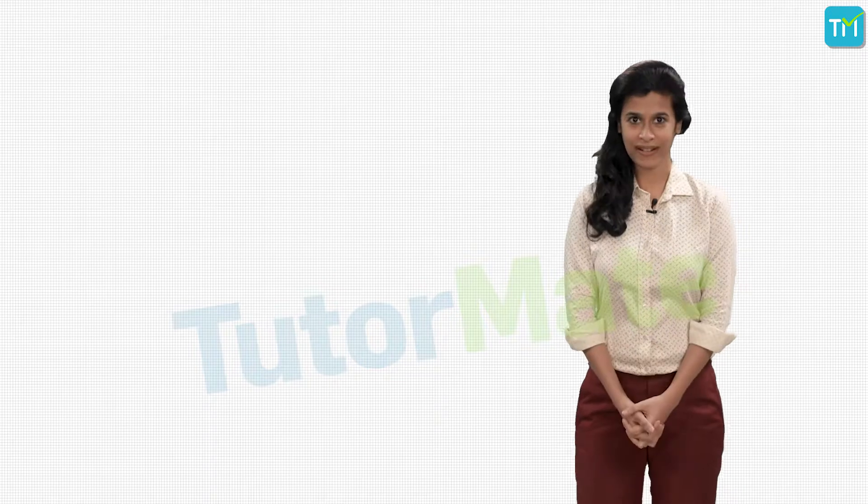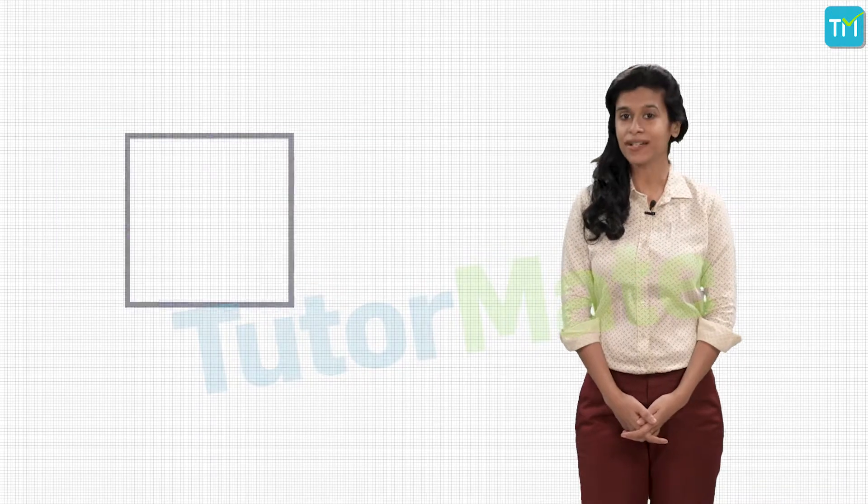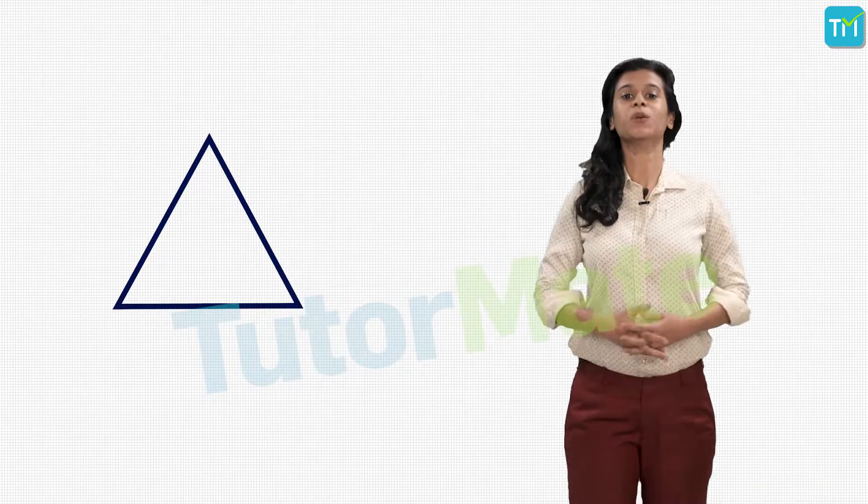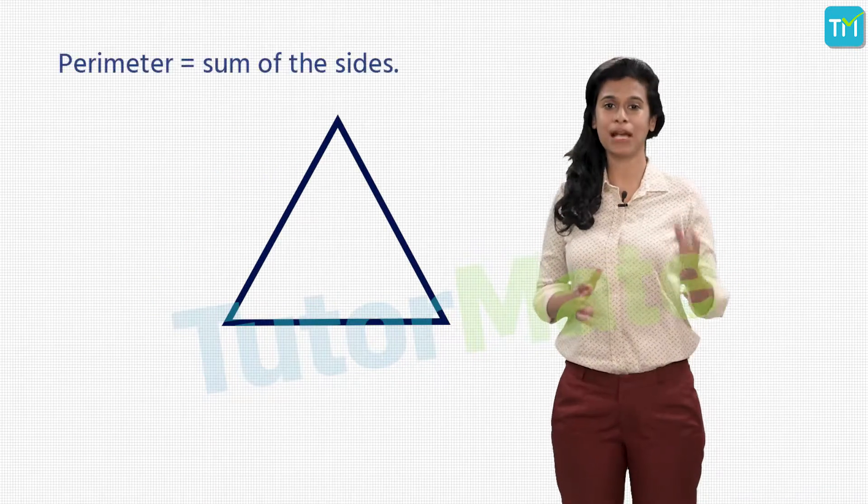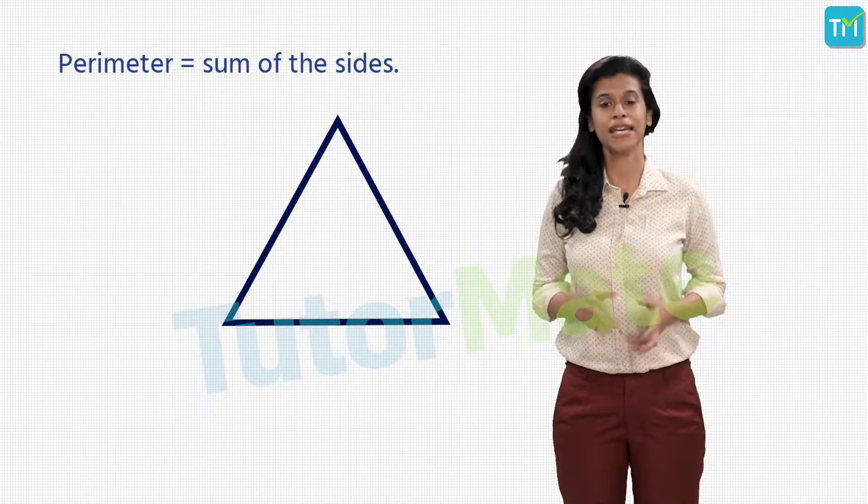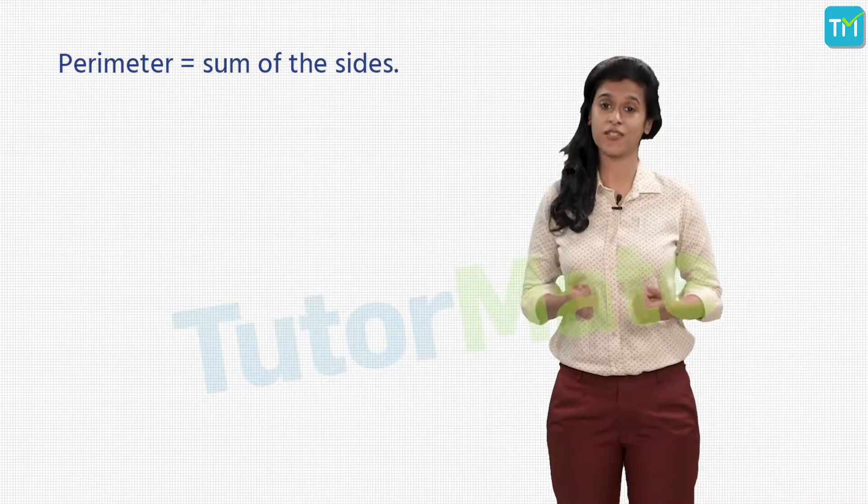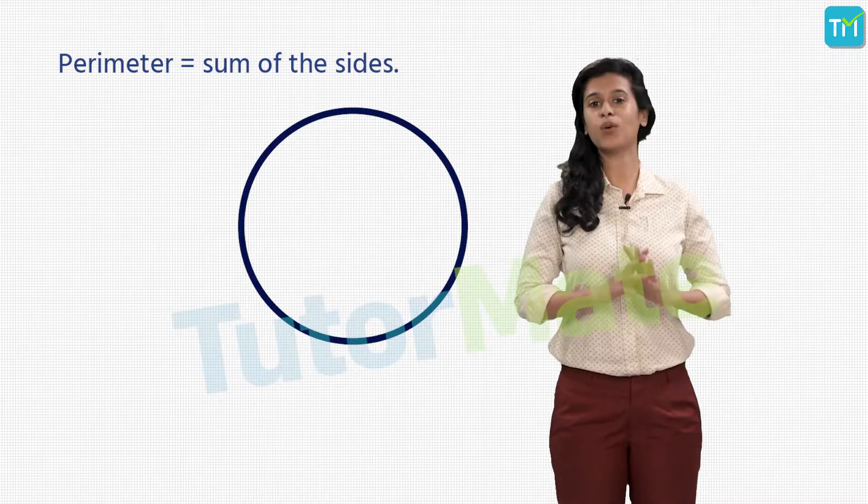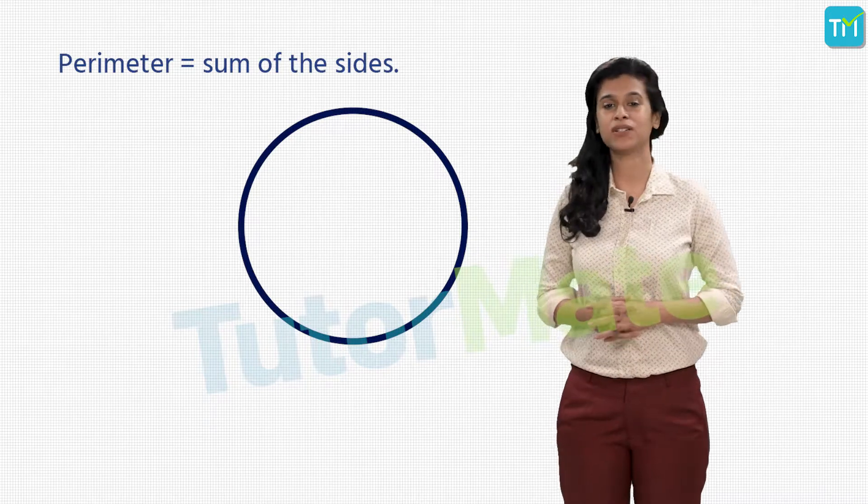What do we call the total length of the sides of a rectangle, square, or triangle? That's right, we call it the perimeter. Basically, perimeter is the sum of the lengths of the sides of the given geometrical figures. Can we also find the perimeter of a circle? But circles don't have sides, do they?